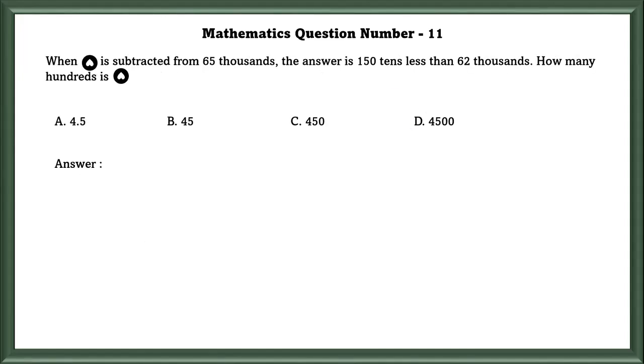Mathematics Question Number 11: When symbol is subtracted from 65,000, the answer is 150 tenths less than 62,000. How many hundredths is the symbol? So 65,000 minus the symbol is equal to 60,500. So the symbol is equal to 4500, that is 45 hundredths.